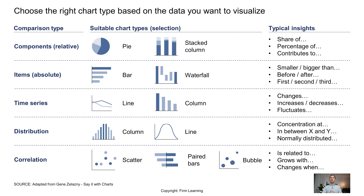Some chart types work better for specific types of data. For component comparison or relative comparison, pie charts or stacked column charts might work well — for things like share of or percentage of. For absolute comparisons, vertical bar charts or waterfall charts might be better. For time series, line charts or column charts work well. There are also distributions, correlations, and so on. I'd encourage you to print out this specific slide as a cheat sheet — I'll offer it as a PDF download linked in the video description.